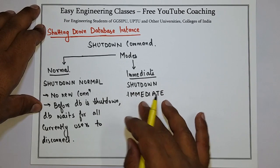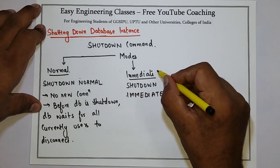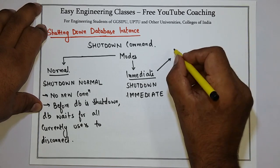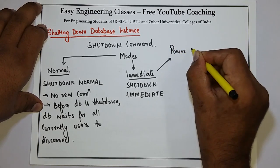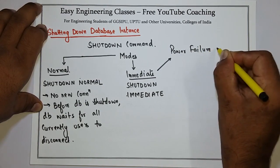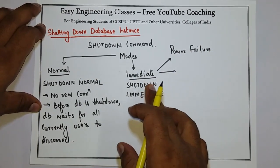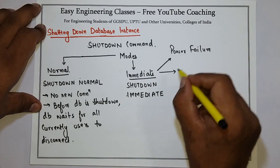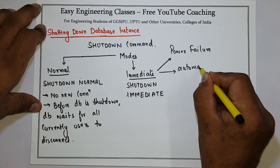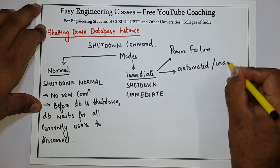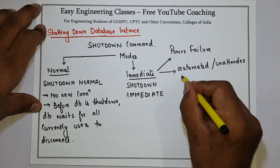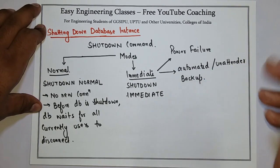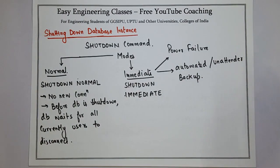There are certain situations where immediate mode is required. One condition can be when a power failure is going to happen soon. The second condition can be an automated or unattended backup. In those situations, we will go for immediate shutdown.